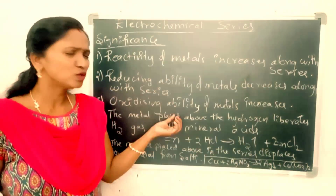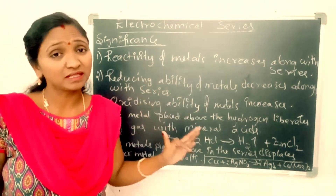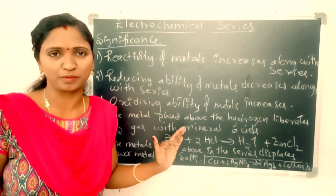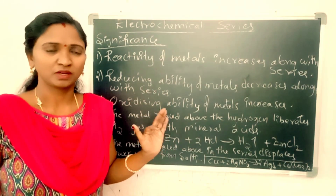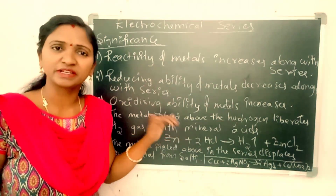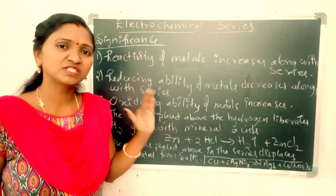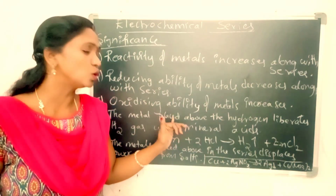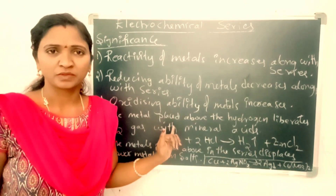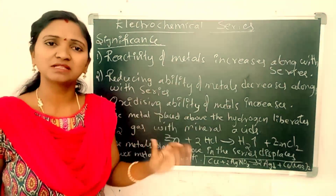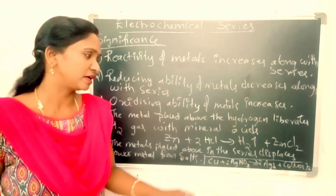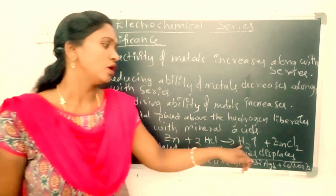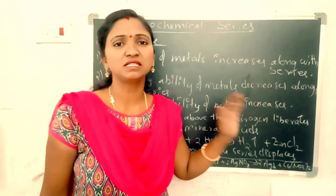Also, the metals present above hydrogen in the series undergo corrosion very fast. These metals, being above hydrogen, are more corrosive and also react with mineral acids to liberate hydrogen gas.